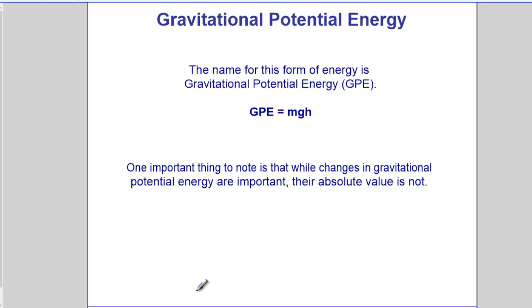Again, the equation for gravitational potential energy is MGH, and from this point forward, we'll say GPE equals MGH. And it could change energy by going up or down.